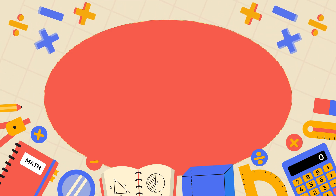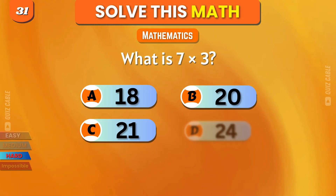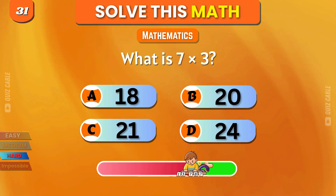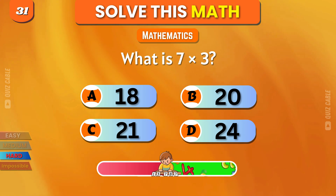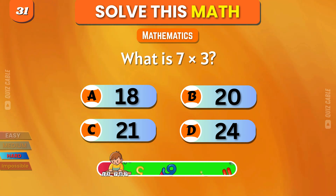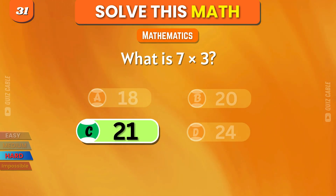Hard level. What is 7 times 3? 18, 20, 21, 24. Yes, 21.